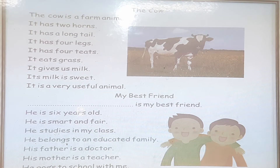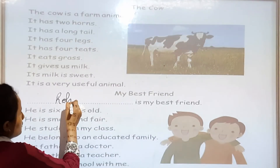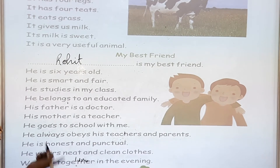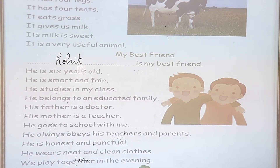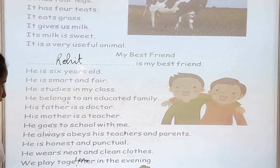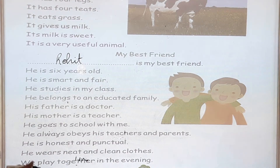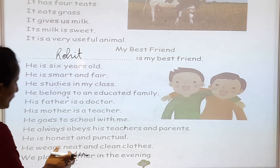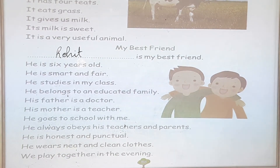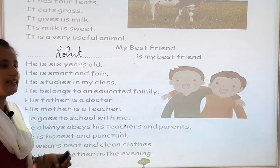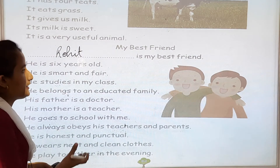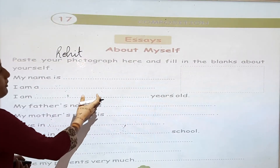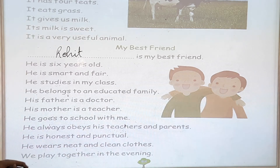In the next line: My Best Friend. You can write about your best friend also. For example — Rohit is my best friend. He is six years old. He is smart and fair. He studies in my class. He belongs to an educated family. His father is a doctor. His mother is a teacher. He goes to school with me. He always obeys his teachers and parents. He is honest and punctual. He wears neat and clean clothes. We play together in the evening. So you are writing about your best friend, about yourself, and you have to write this in your copy.